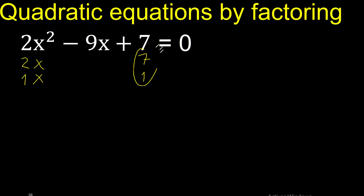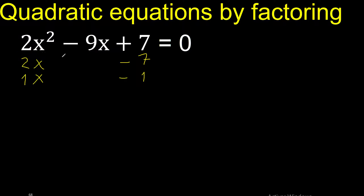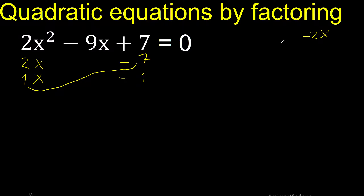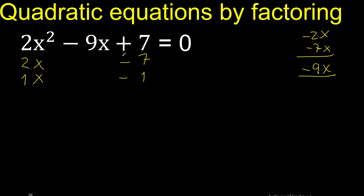Let's try the signs: plus plus is plus, minus minus is plus. Let's try minus, because here we have minus. Let's verify: 2 multiplied by minus 1 is minus 2; 1 multiplied by minus 7 is minus 7. Minus 2 minus 7 is minus 9. Therefore this is correct.